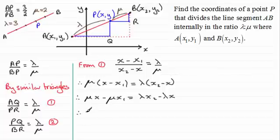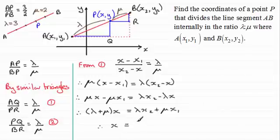Factorizing as well gives me (lambda plus mu) all times x equals lambda x₂ plus mu times x₁. And now I can divide both sides by lambda plus mu, and that gives me the x coordinate for P, which is (lambda x₂ plus mu x₁) all divided by (lambda plus mu).